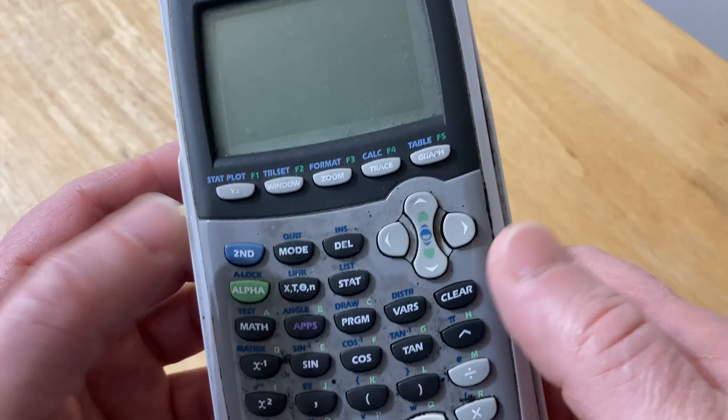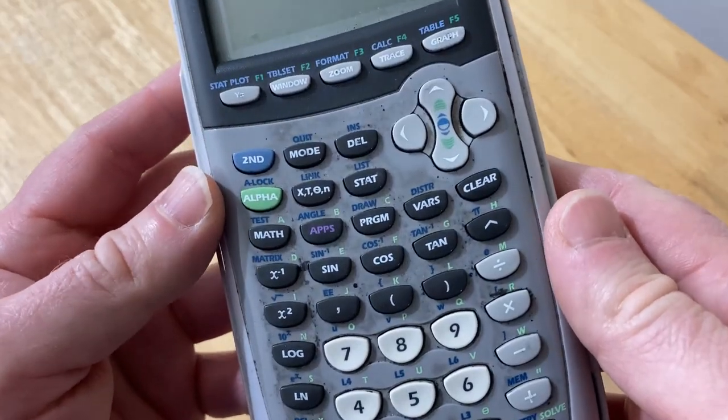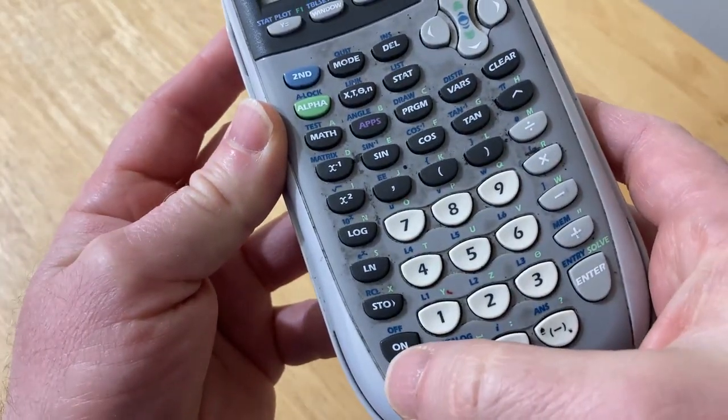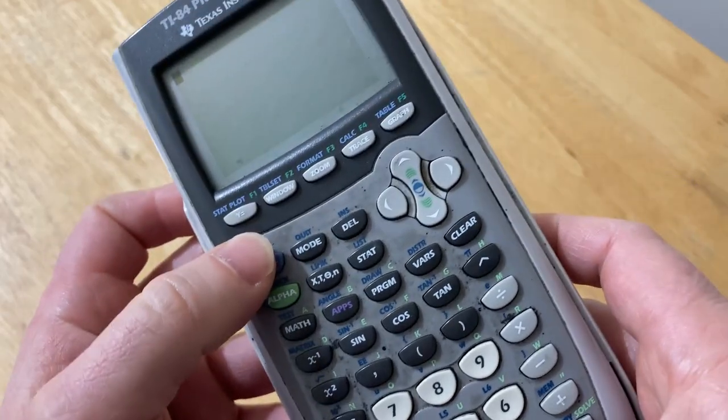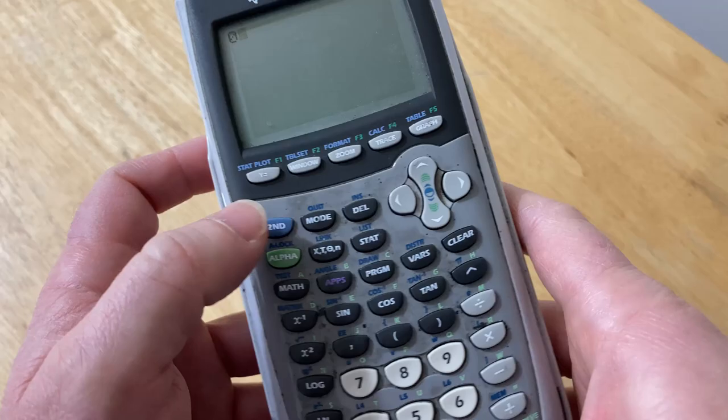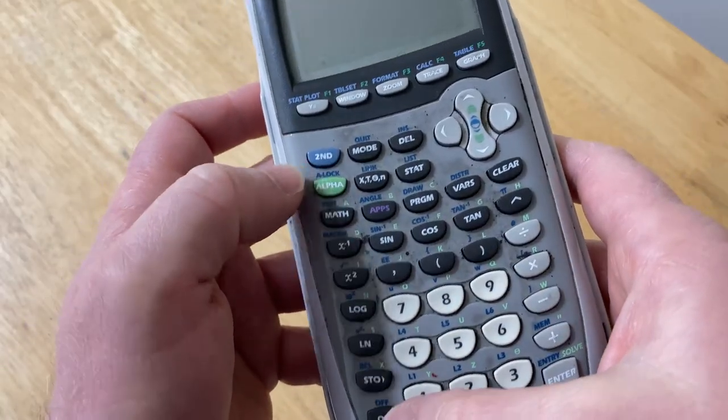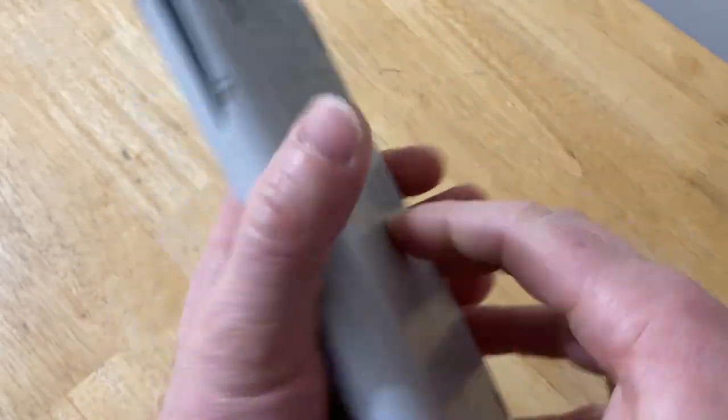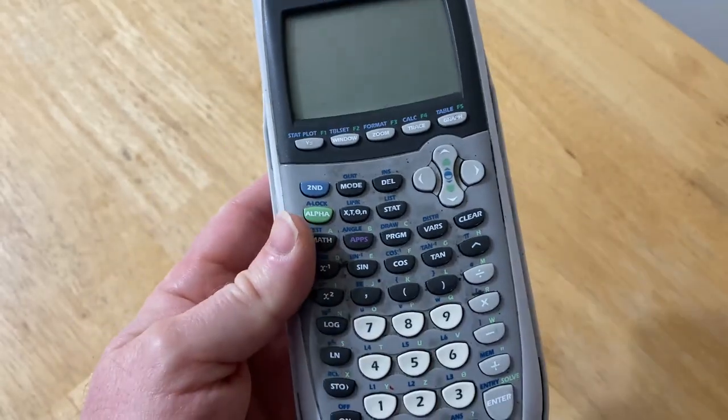To exit this, you just hit clear, and you're back to the original screen. To turn it off, you have to hit the on key, but it's blue, so you hit second first. So it just takes some practice and you do get used to it. And yeah, it's a great calculator. I hope you've enjoyed this video. Good luck.